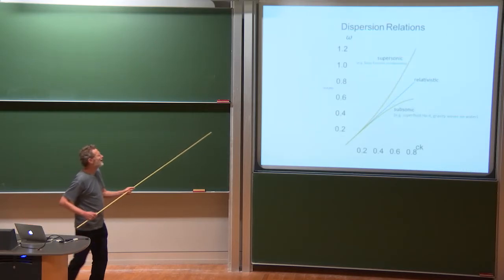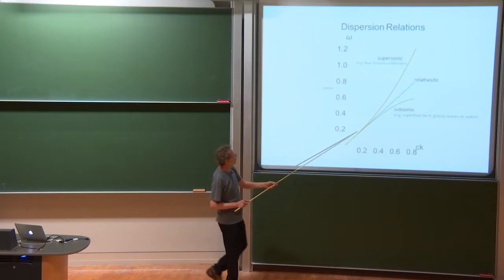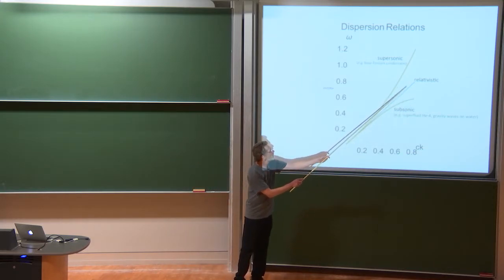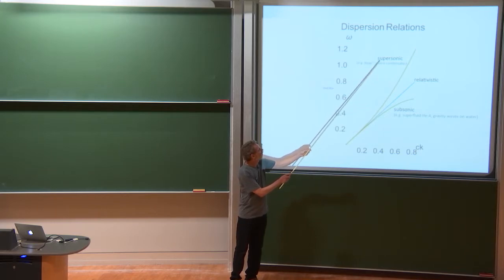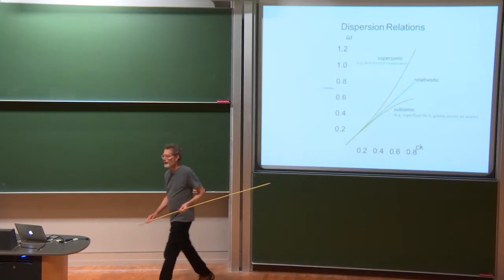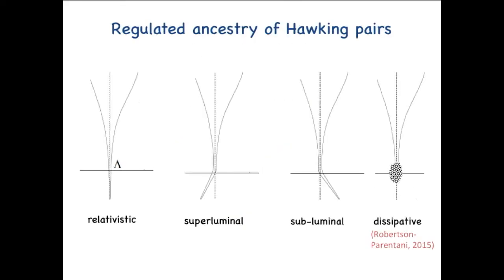Okay, so we could consider then, like I just described, a subsonic type dispersion. Here's the relativistic one, or supersonic. This is the one I'll focus on mostly later because that's the one that applies for a Bose-Einstein condensate.